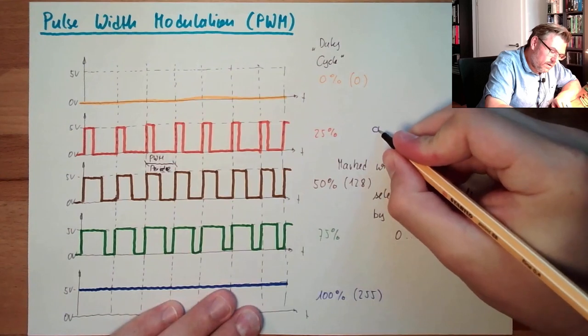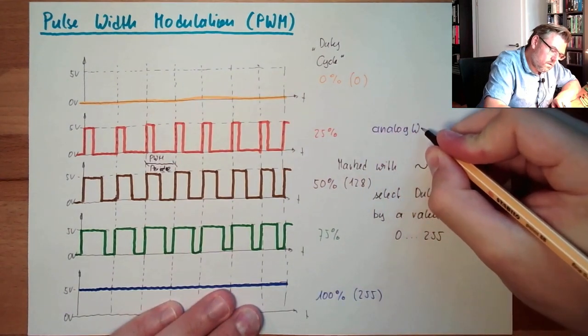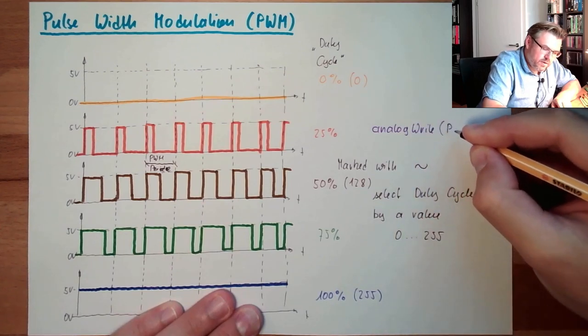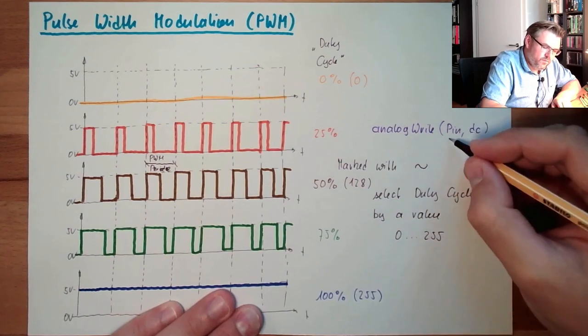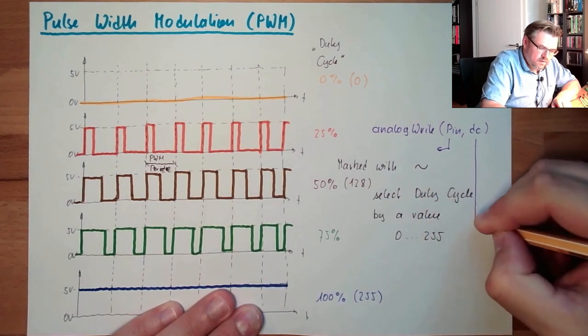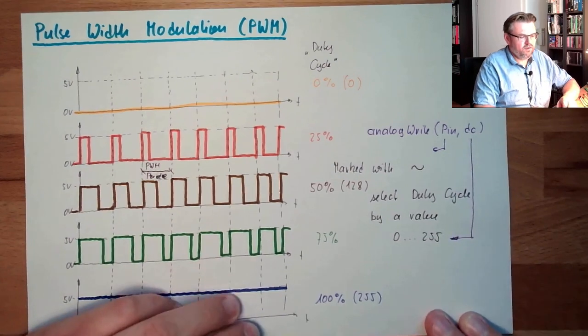But there is analog write. And you select the pin and the duty cycle. The pin must be one marked with a tilde sign. And this must be a value between 0 and 255.